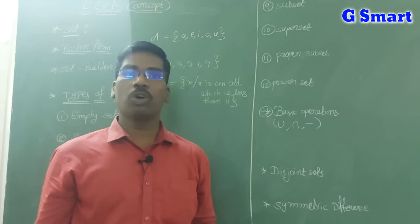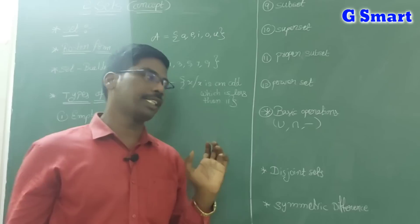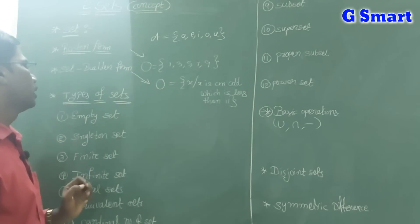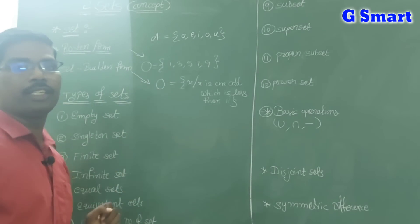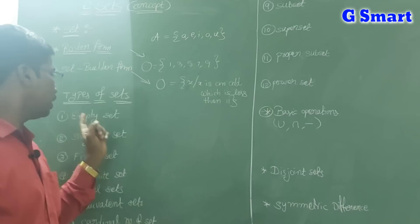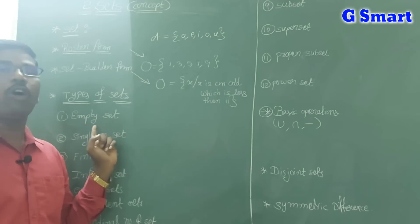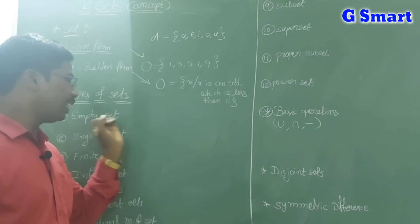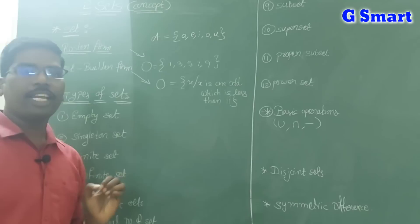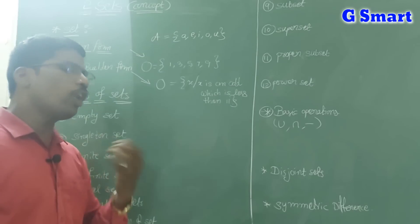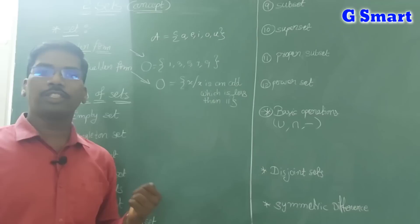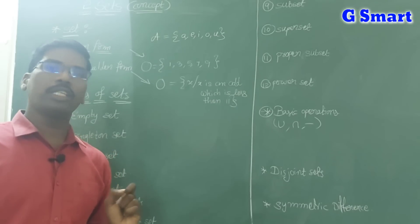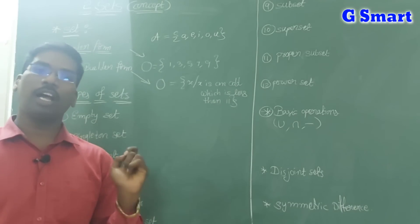Now we are going to discuss types of sets. The first type is the empty set, also called void set or null set. An empty set is a set in which no element is there. A set in which no element is present is called a void set, null set, or empty set.